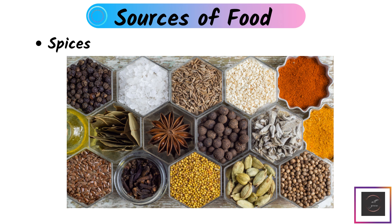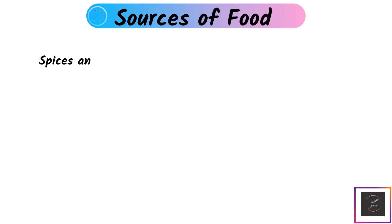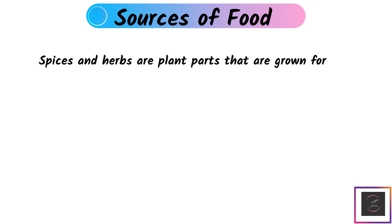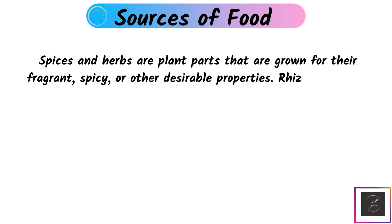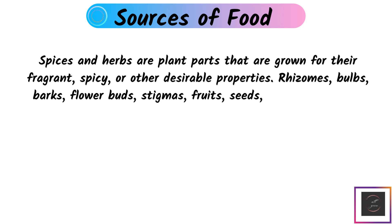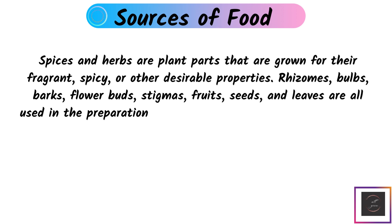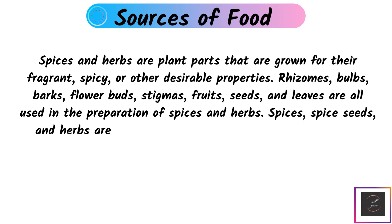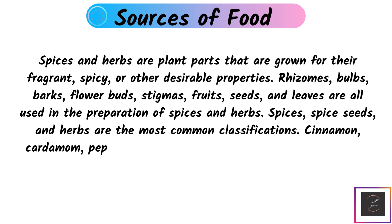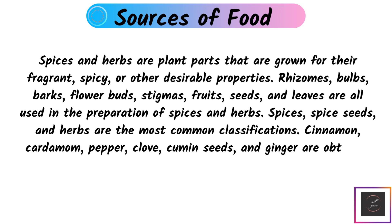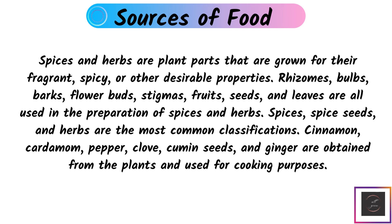Spices: Spices and herbs are plant-based, grown for their fragrant, spicy, and other desirable properties. Rhizome, bulb, flower bud, stigma, fruits, seeds, and leaves are all used in the preparation of spices and herbs. Spices, seeds, and herbs are the most common classification. Cinnamon, cardamom, pepper, clove, cumin seeds, and ginger are obtained from plants and used for cooking purposes.